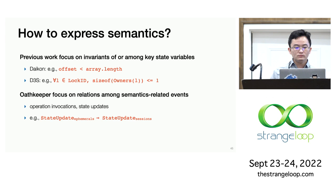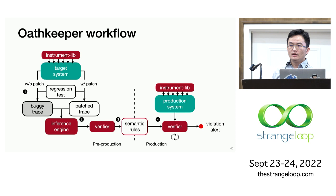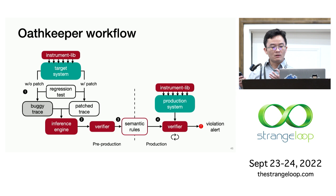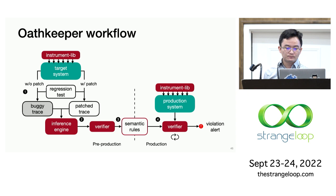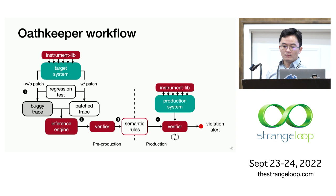The workflow of OathKeeper consists of two phases. In the pre-production phase, it infers semantic rules from past semantic failure regression tests. This is done by instrumenting the target system and running both the buggy version and the patched version to emit two sets of traces. The inference engine then automatically extracts highly relevant semantic rules from these two traces. In the runtime phase, OathKeeper continuously checks system traces against these inferred semantic rules to find potential violations.